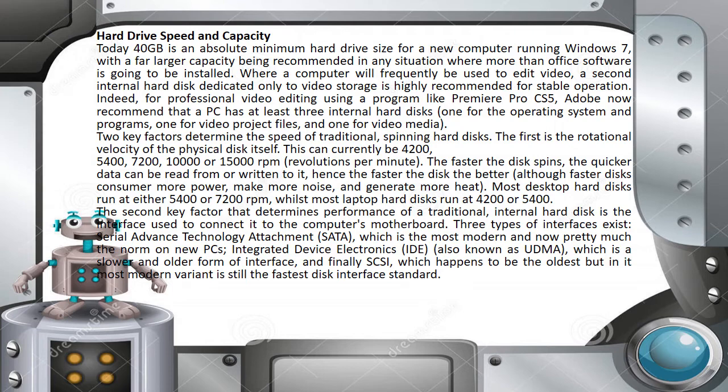For hard drive speed and capacity, 40 GB is an absolute minimum hard drive size for a new computer running Windows 7, with a far larger capacity recommended where more than office software will be installed. Where a computer will frequently be used to edit video, a second internal hard disk dedicated only to video storage is highly recommended. For professional video editing using a program like Premiere Pro CS5, Adobe recommends a PC has at least 3 internal hard disks: one for the operating system and programs, one for video project files, and one for video media.